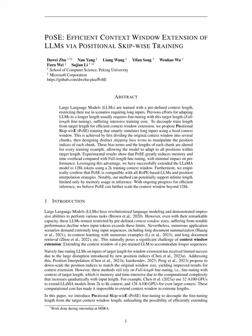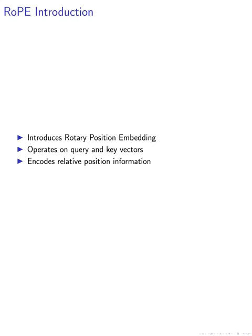In this paper, we introduce the concept of Rotary Position Embedding (RoPE), a method that encodes the position information of tokens using a rotation matrix. Unlike previous absolute position encodings, RoPE operates on the query and key vectors at each layer, incorporating explicit relative position dependency.